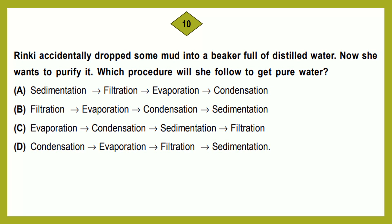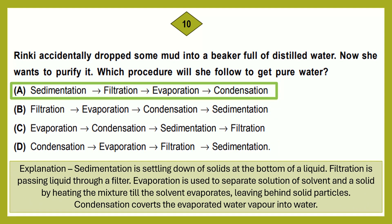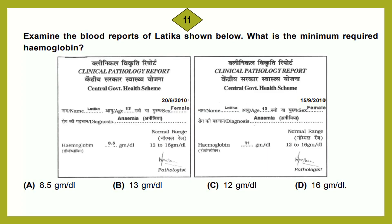Question number 10: Rinke accidentally dropped some mud into a beaker full of distilled water. She wants to purify it. Which procedure will she follow to get pure water? The correct answer is option A: sedimentation, filtration, evaporation, condensation. Sedimentation is settling down of solids at the bottom of a liquid. Filtration is passing liquid through a filter. Evaporation separates a solution by heating until the solvent evaporates. Condensation converts evaporated water vapor back into water.